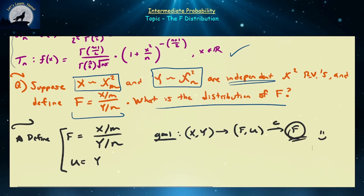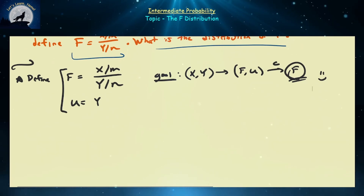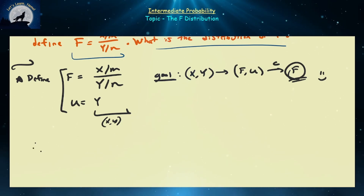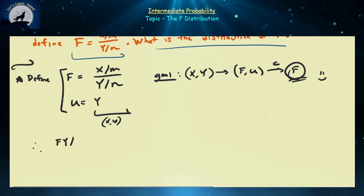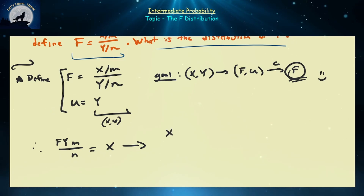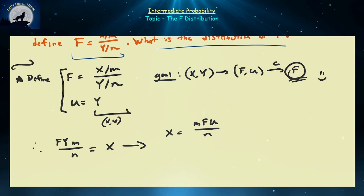Once we have our definitions of F and U, we need to isolate X and Y as functions of F and U. The first equation gives us X equal to M times F times U all over N. And Y will just be equal to U.